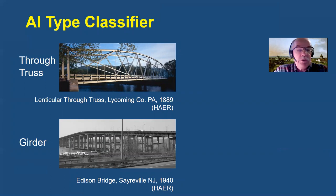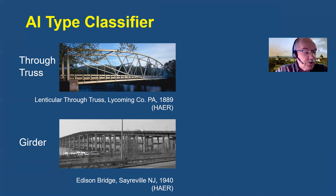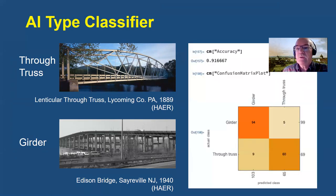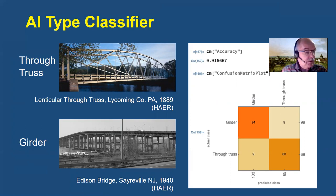Here's an example of the artificial intelligence classifier being used to determine the main span type. The AI was trained using 80 images of through trusses, such as this elegant 1889 lenticular through truss in Lycoming County, Pennsylvania, and 80 images of girder bridges, such as this 1940 Edison Bridge in Saraville, New Jersey. Then it classified 168 new images as either through truss bridges or girder bridges. A screenshot from Mathematica shows that the accuracy was almost 92% correctly identified, confirmed by the confusion matrix plot.